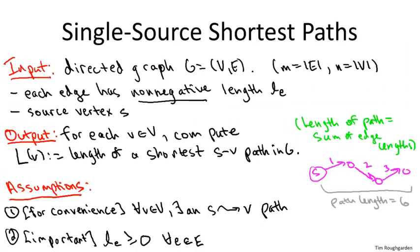Let me briefly remind you the problem we're solving: the single source shortest path problem. We're given a directed graph and a source vertex S, assuming there's a path from S to every other vertex V — if not, we can detect it with an easy preprocessing step. Our task is to find the shortest path from S to each possible destination V, where every edge has a non-negative edge length L sub V.